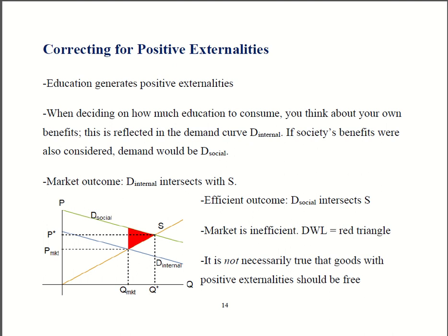One example we had earlier was education. It produces benefits to society, not just to students. Those benefits — things like stronger democracy and socialization, making kids into adults — are benefits that have no market. So it's an externality.